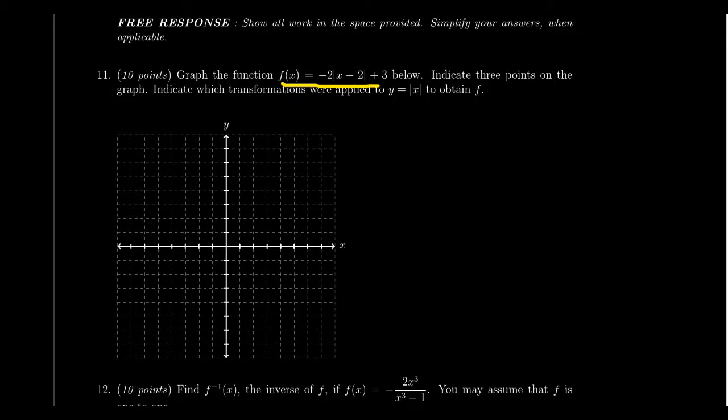And it is going to ask you to label, indicate three points on the graph. This is mostly so that I can read your graph more accurately when it comes time to grade it. And we're supposed to also indicate which transformations were applied from the original function y equals the absolute value of x. So that's our basic function right here, which remember the absolute value of x, I'm going to use the line right here.